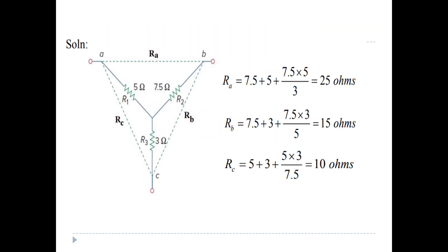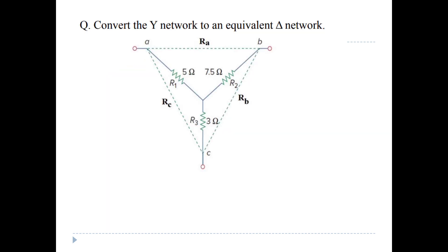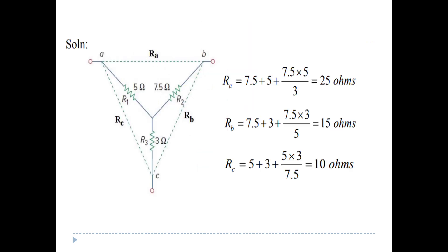Let's do a formula example. Given RA, RB, and RC in the delta form: RA equals RAB times RCA divided by the sum. With values: RA equals 7.5 plus 5. RB equals 7.5 plus 3, with product divided by 5, giving 50. RC equals 5, giving RC equal to 7.5.